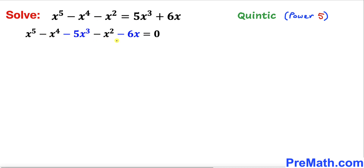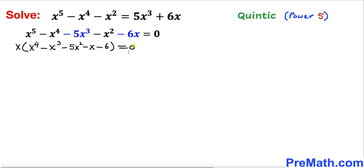Now we can see that x is common on the left hand side, so we factor x outside. Inside the parentheses this becomes x⁴ - x³ - 5x² - x - 6 = 0. We are now going to manipulate this polynomial inside the parentheses to find its factors.